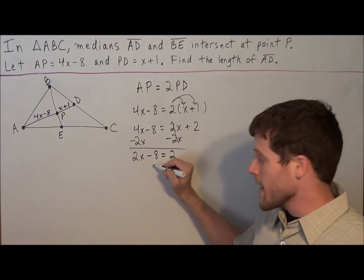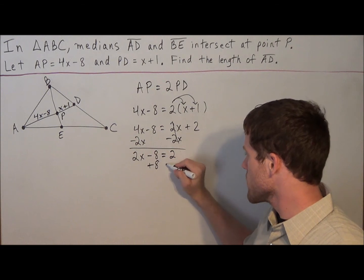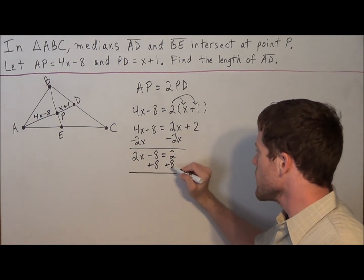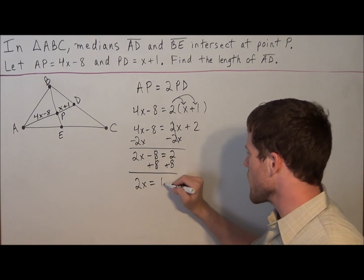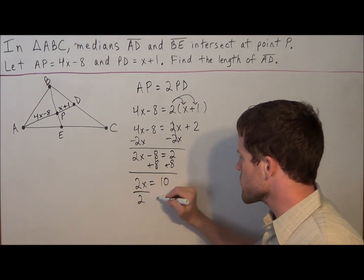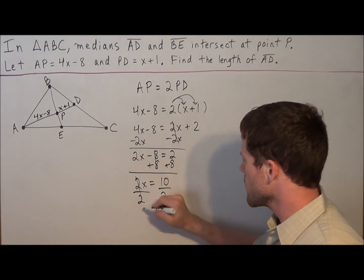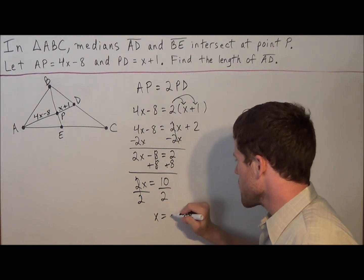To get rid of minus 8, we're going to add 8 to both sides. Minus 8 plus 8 cancels. 2x equals 10. Divide both sides by 2. This tells us that x is equal to 5.